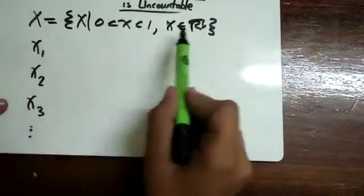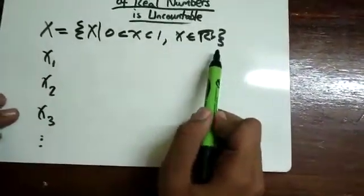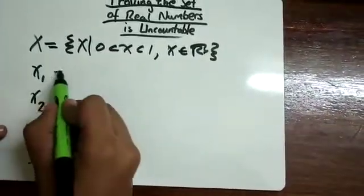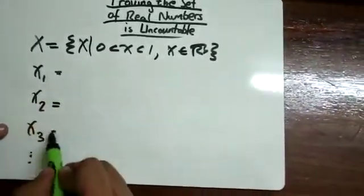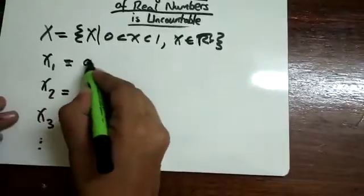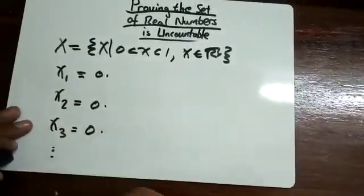Now, since x are real numbers, and they're greater than 0, but less than 1, their first part is going to be 0 point, 0 point, and 0 point.